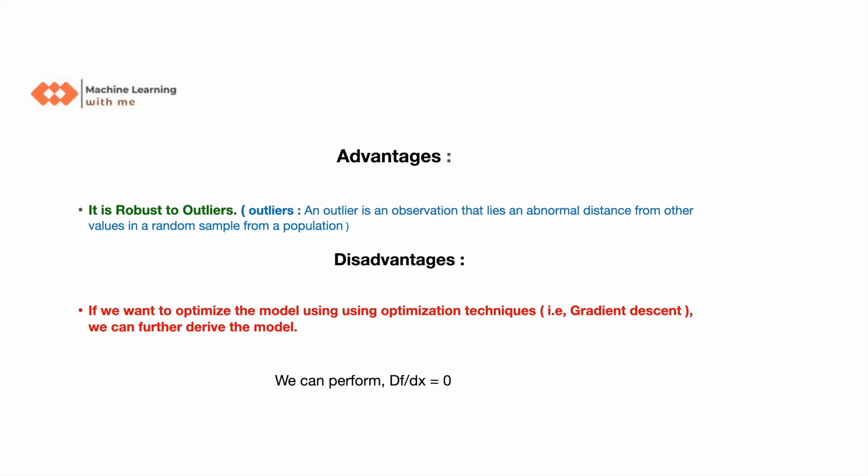When there are outliers in the data, we need to go for MAE. Mean Absolute Error performs really good and doesn't get any effect from outliers.